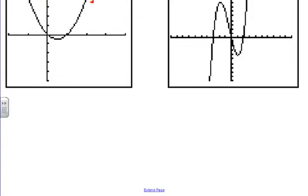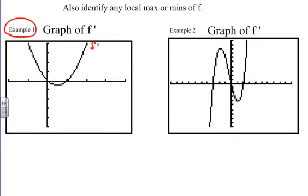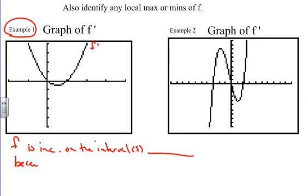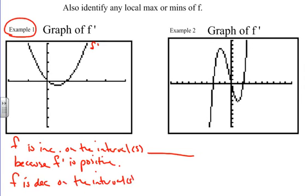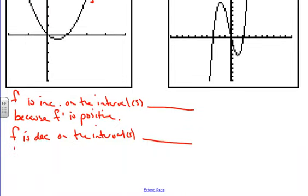If you recall, in previous lessons we took the graph of f, did analysis of it, and wrote a justification. We found that f is increasing on an interval because f prime is positive. We also found that f is decreasing on an interval because f prime is negative.